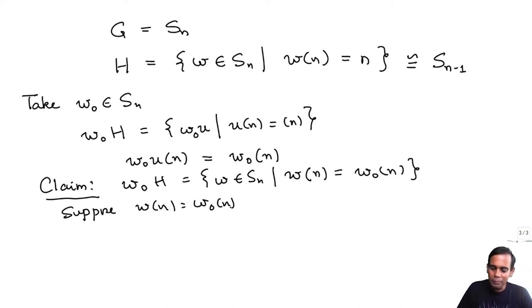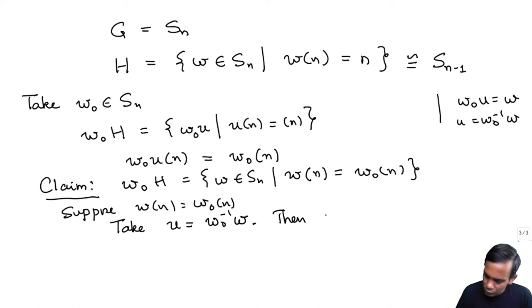Then we ask, is W of the form W0 times U where U takes N to N? And so we just have to find this element U. And if you think about it a bit, you will probably come up with the same answer as me, which is that you take U to be W0 inverse times W.